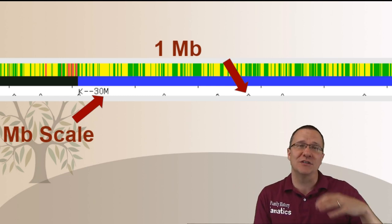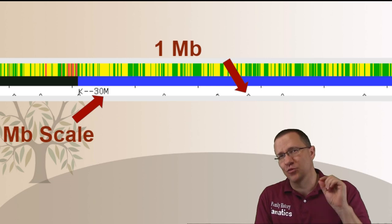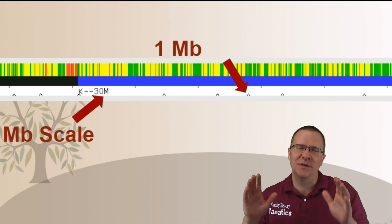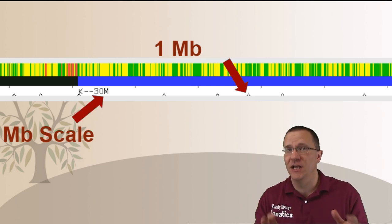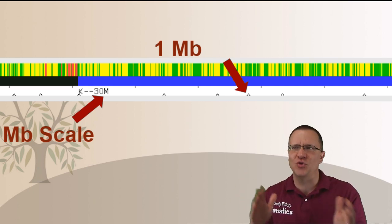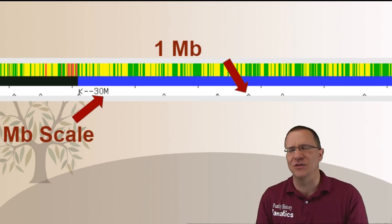So if you actually go between 30 and 40 megabases you'll count 10 of those carat marks. So this is a way when you're actually zooming in you can see roughly what position absolute position something is in.